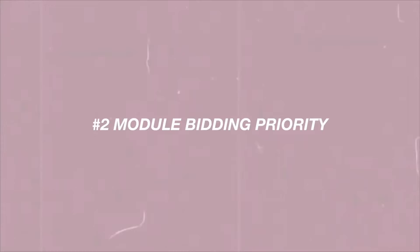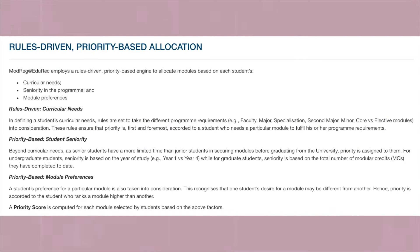If you're lucky you'll get a lot or all of your modules, but if you're not lucky you may not get many. However, if you're year four, you get priority. Different people get different priority based on your curriculum needs, your seniority, and your module preferences — this is how the school prioritizes who should get a particular module.